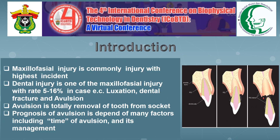As an introduction, we know that maxillofacial injury is one of the injuries with a high incidence. The most common maxillofacial injury is dental injury, with an incidence rate of about five to sixteen percent of all injuries. Dental injury can be defined as an injury or trauma that affects the teeth and periodontium, including the surrounding tissue — lips, tongue, jaw bone. Dental injury can occur at a young age or in adults, caused by accident or during exercise. Types of dental injury commonly found are luxations, also called tooth mobility, fractures, and avulsion.